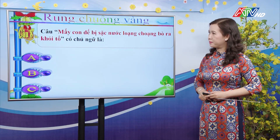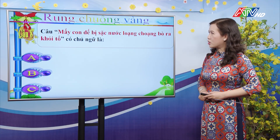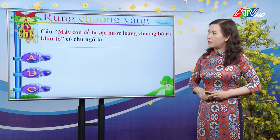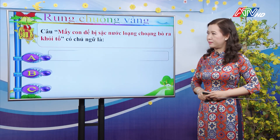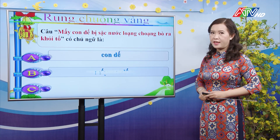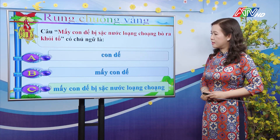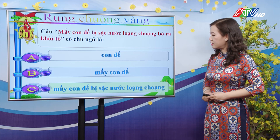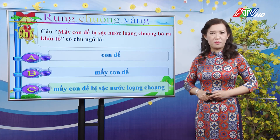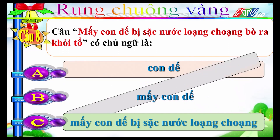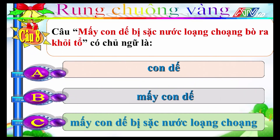Câu 8: Câu "Mấy con dế bị sặc nước loạn choạng bò ra khỏi tổ" có chủ ngữ là: A-Con dế; B-Mấy con dế; C-Mấy con dế bị sặc nước loạn choạng. Đáp án đúng là B: chủ ngữ trong câu trên là "mấy con dế".